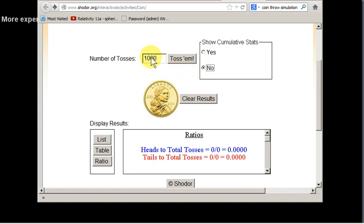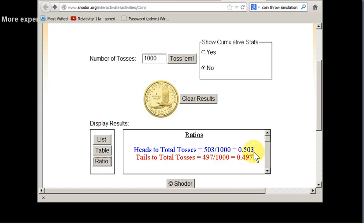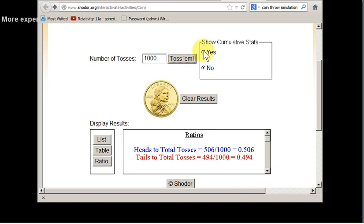For example, I've put in 1,000 here and I toss 1,000 coins. We can bring up a table, 503 heads out of 1,000 coins. We can get the ratio, which is 0.503. What I can then do is toss another 1,000 coins and select show cumulative stats.